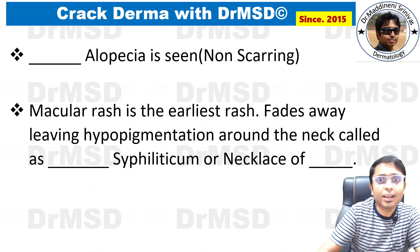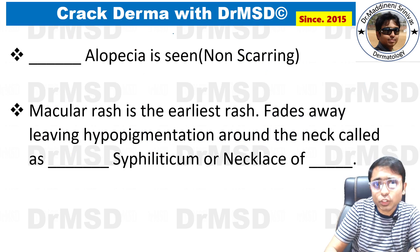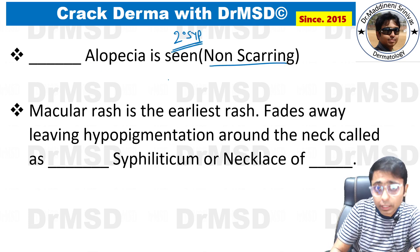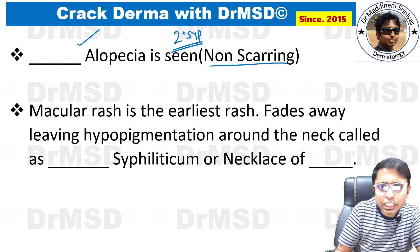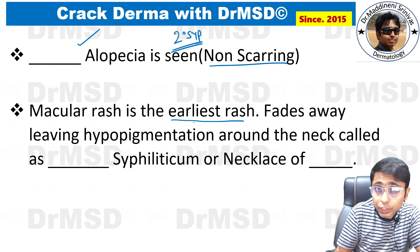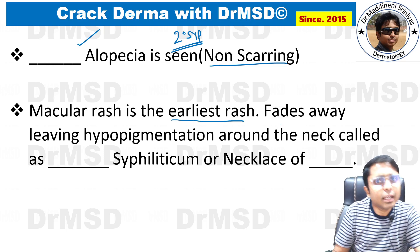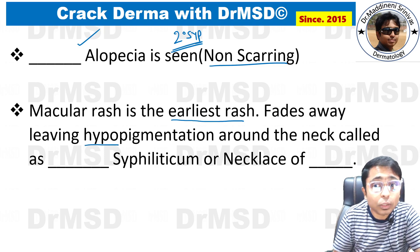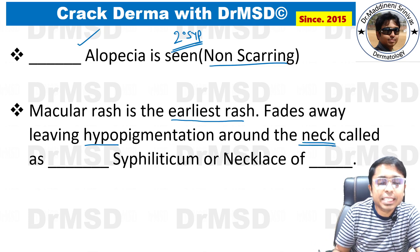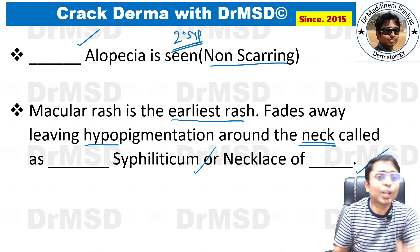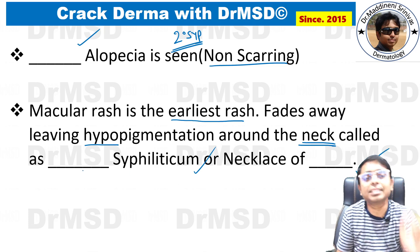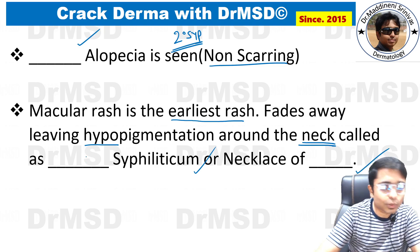A few questions for you: in secondary syphilis there is a non-scarring alopecia seen over the scalp — what is its special name? Also, the macular rash is the earliest rash, also called roseola rash, which fades and leaves hypopigmentation around the neck. This is given the special name 'dash syphiliticum,' also called the 'necklace of dash' — try to fill in these blanks as your homework.